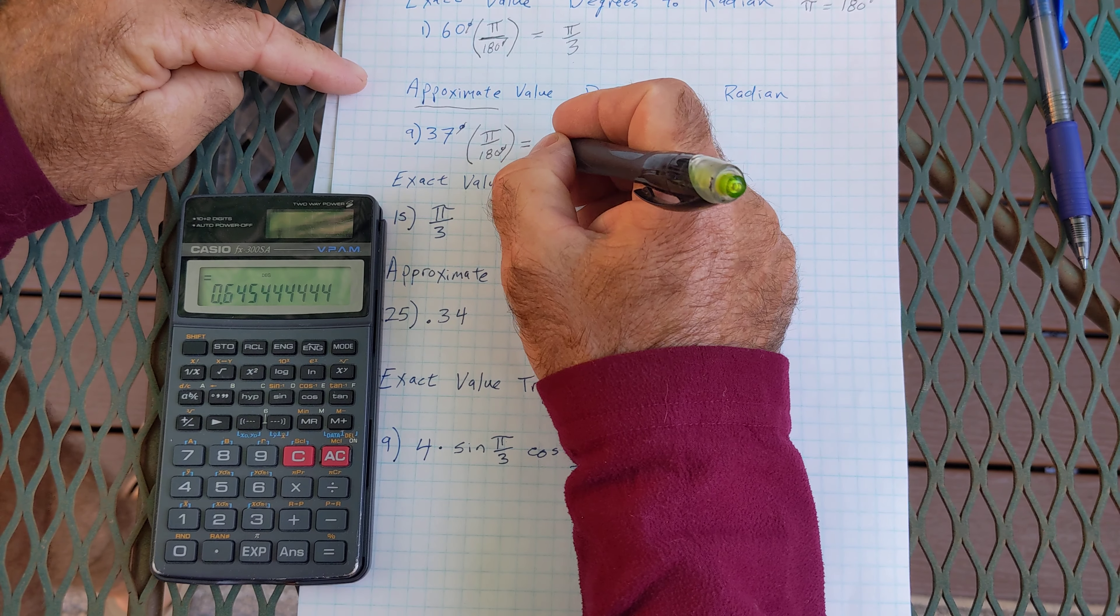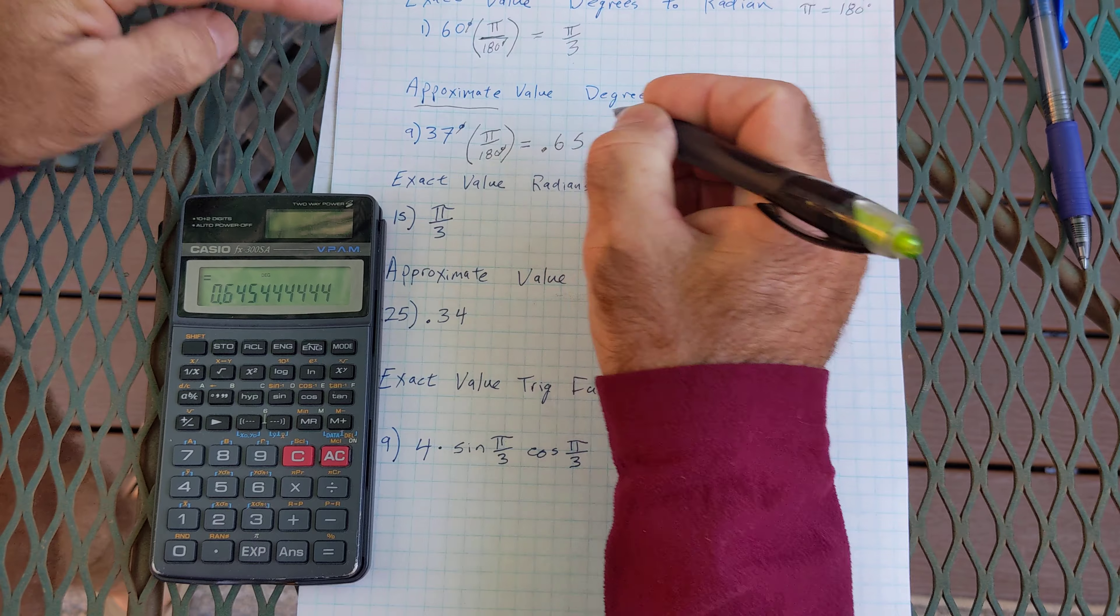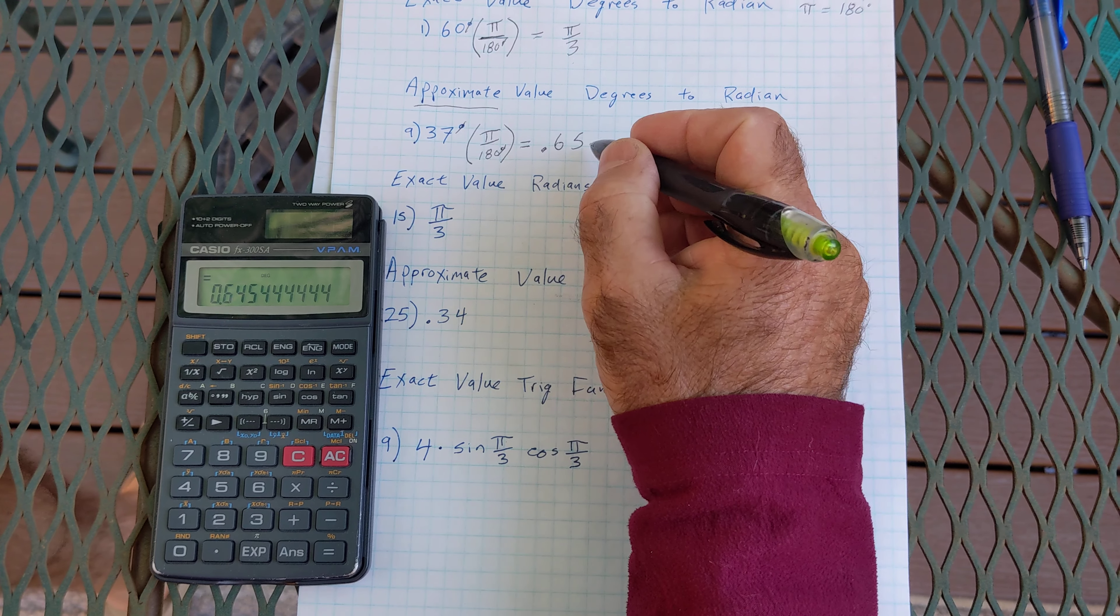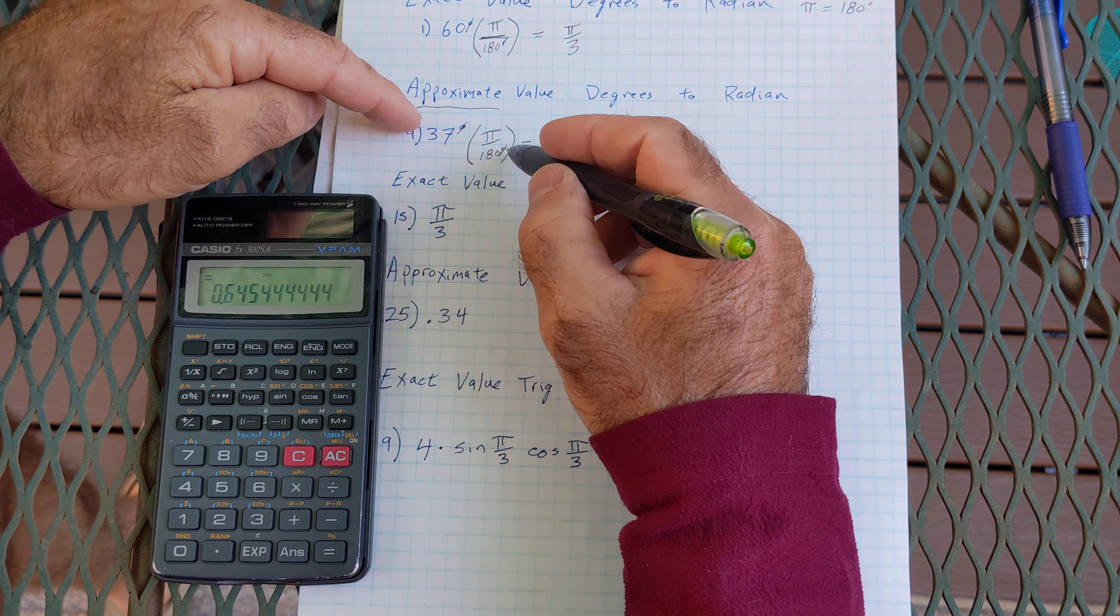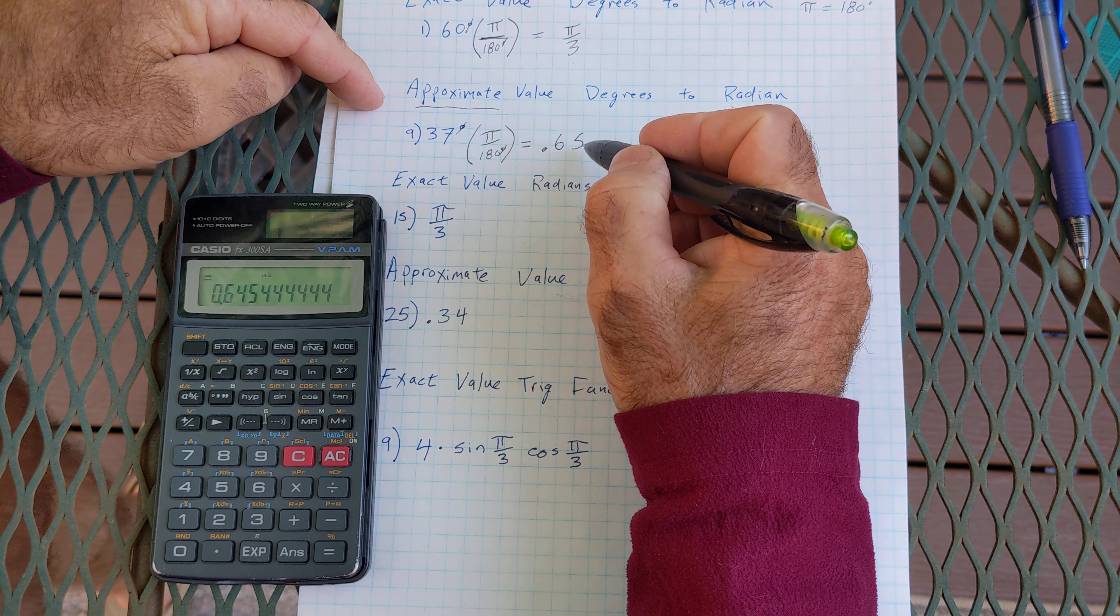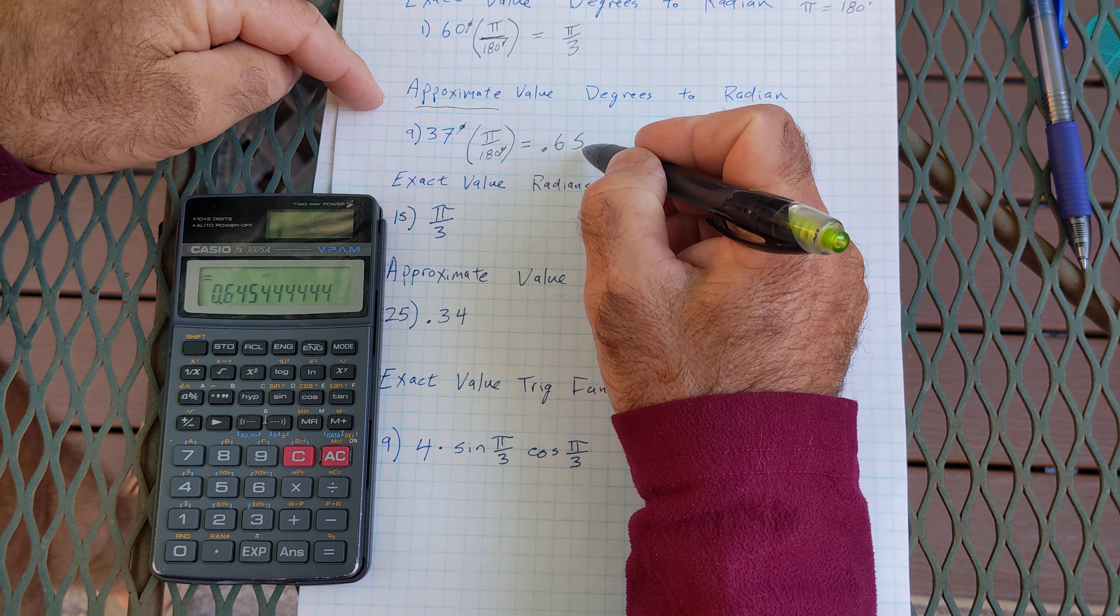So that right here is radians. I don't write any radian unit on there because it's unitless. My degrees cancel out and that gives me an approximate radian measure.